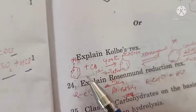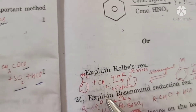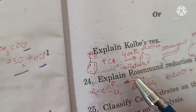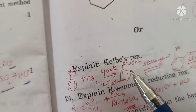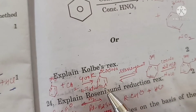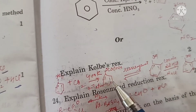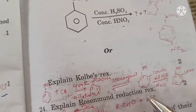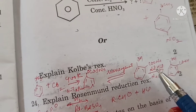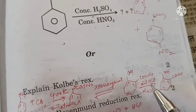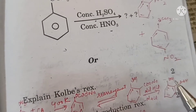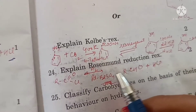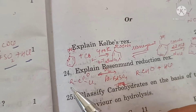Explain Kolbe's reaction. Sodium phenoxide, when reacted with carbon dioxide at high temperature (400 K) and high pressure (4–7 atm), forms sodium benzene carbonate, which on rearrangement forms sodium salicylate. When treated with dilute HCl, Na is replaced with H to give salicylic acid.